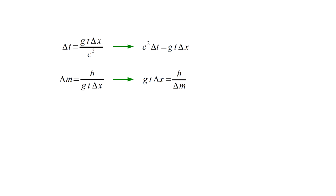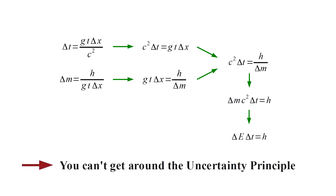Now two expressions are equal to g t delta x, so they are equal to each other. c squared delta t equals h over delta m. We rewrite this as delta m c squared equals h. Finally, because E equals m c squared, delta m c squared is delta E, and we have the uncertainty principle. Uncertainty in energy times uncertainty in time equals Planck's constant.